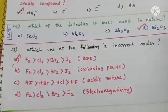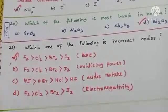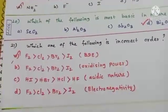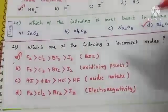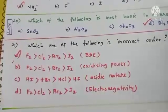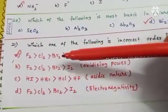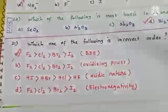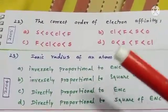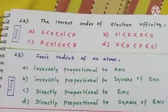Option D, electronegativity order F > Cl > Br > I, is correct — electronegativity decreases going down the group. So among the four orders, only option A (bond dissociation energy) is the incorrect one. The correct bond dissociation energy order is Cl₂ > Br₂ > F₂ > I₂. Question 22 asks for the correct order of electron affinity among S, O, F, and Cl.